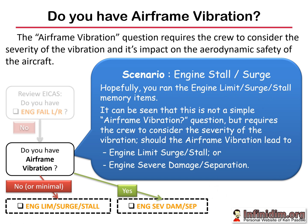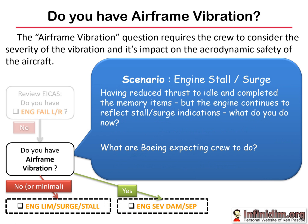In this scenario, which checklist would Boeing believe is the appropriate response? Probably engine limit/surge/stall memory items. So it's not just a simple yes/no - there's an element of severity. The underlying context is: what do you want to do with that engine - keep it running at idle or shut it down? Having reduced thrust to idle and completed the memory items but the engine continues to surge and stall, what do you do? Typically it's not unusual in training to revert to either severe damage/separation memory items to shut the engine down, or to action the next sequence in the engine limit/surge/stall checklist - fuel control switch to cut-off by memory.